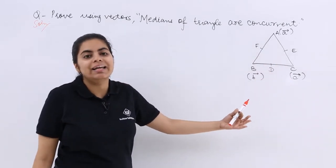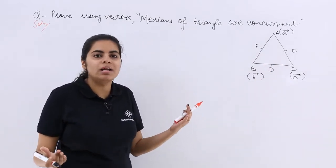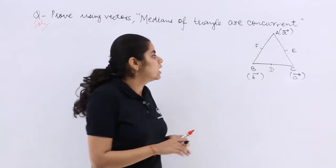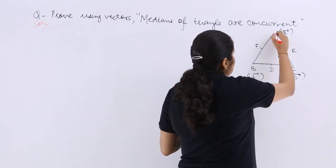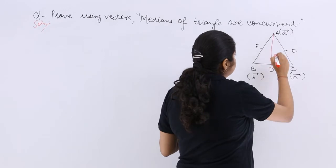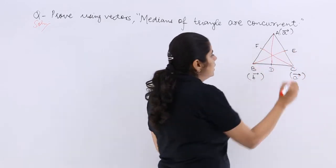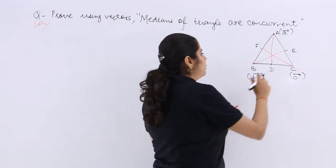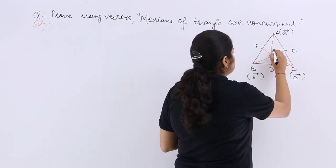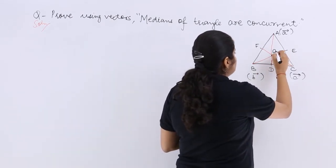Median will divide the line into equal two parts or median bisects the line. Now if I see, I have to join AD, similarly I join BE, similarly I join CF. So we get a single point and that single point is G or it is O.